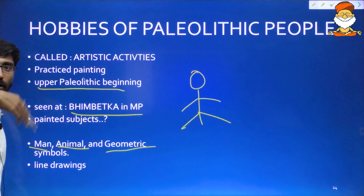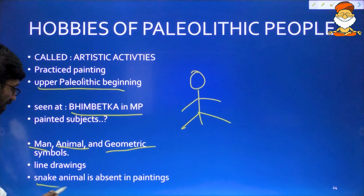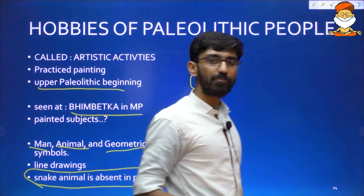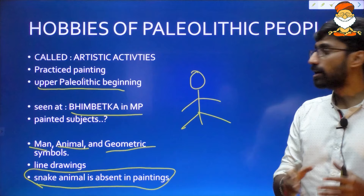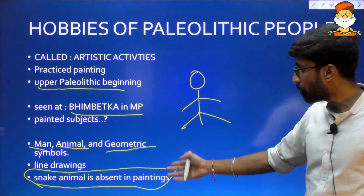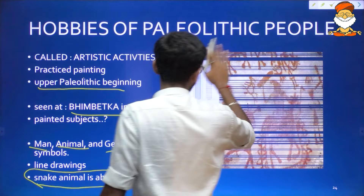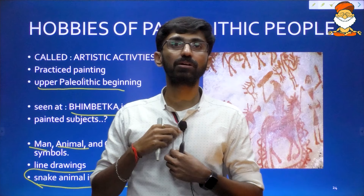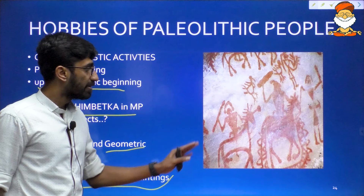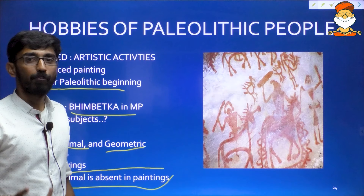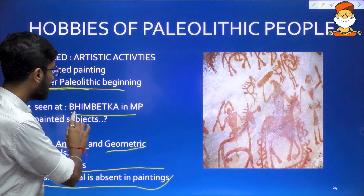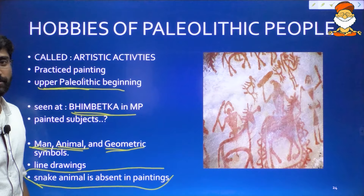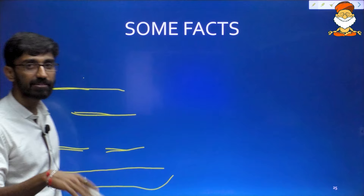The Paleolithic people painted geometric symbols, different animals they knew, human figures, and their daily activities — all as simple line drawings. One animal that is absent in their paintings is the snake. These simple line drawings are from the Paleolithic time period, specifically beginning in the Upper Paleolithic. Bhimbetka is one of the most famous sites for these cave paintings. We come to know about the animals Paleolithic people knew through their paintings.